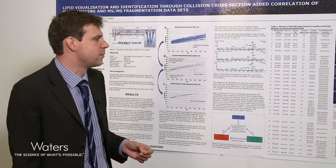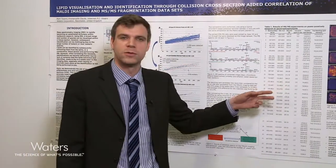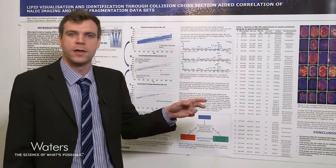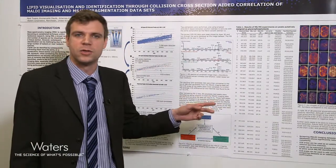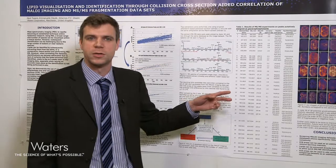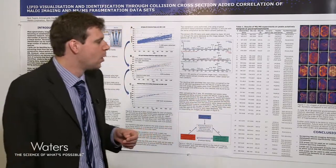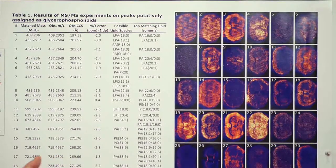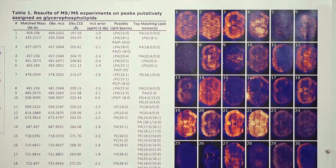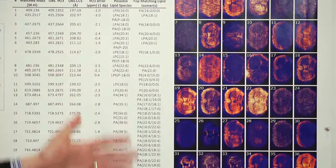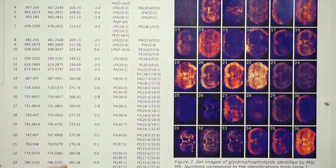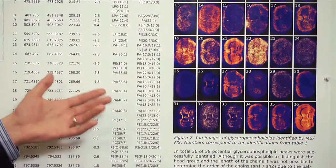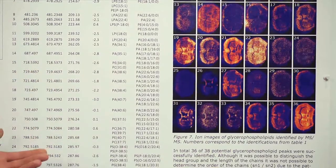Because this is in negative mode, we could generally only narrow it down to one of two isoforms, as we cannot distinguish the SN1/SN2 order — which is the longer and which is the shorter chain. Once we've done this, we can go back to our imaging data set and pull out the relevant images for MS/MS. We now have a set of images that aren't just images of potential lipid candidates — these are images of species that we are confident are lipids and we know what those lipids are.